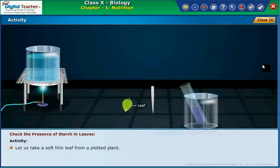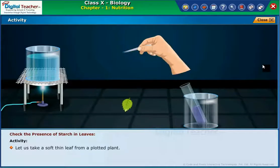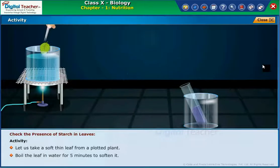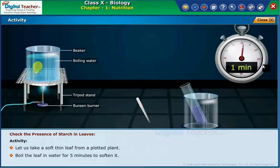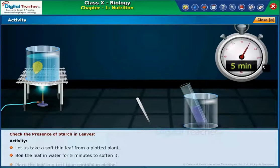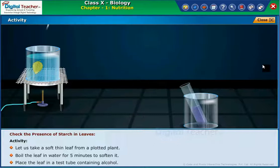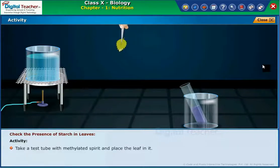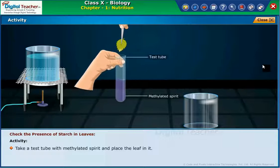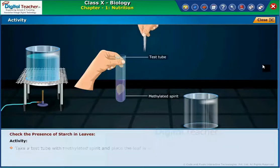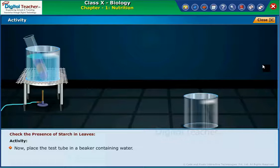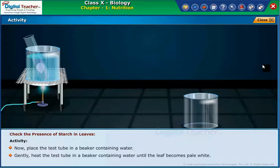Let us take a soft, thin leaf from a potted plant. Boil the leaf in water for five minutes to soften it. Place the leaf in a test tube containing alcohol — take a test tube with methylated spirit and place the leaf in it. Now place the test tube in a beaker containing water, and gently heat until the leaf becomes pale white.